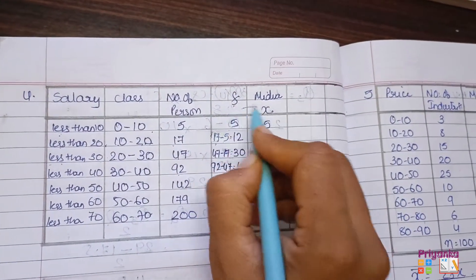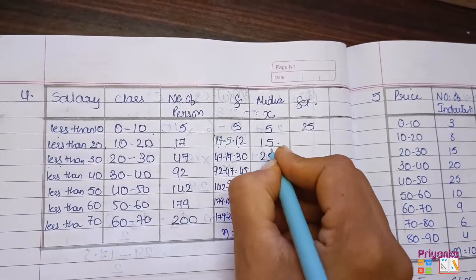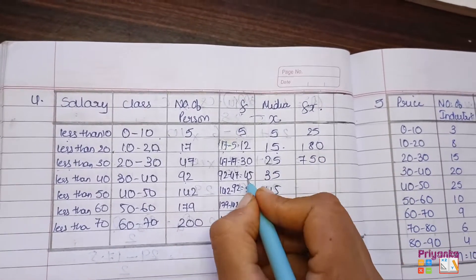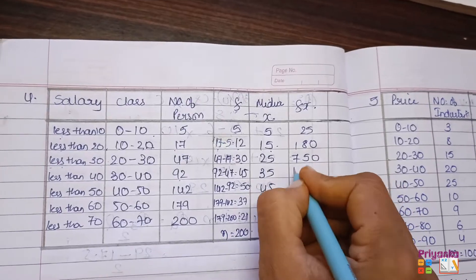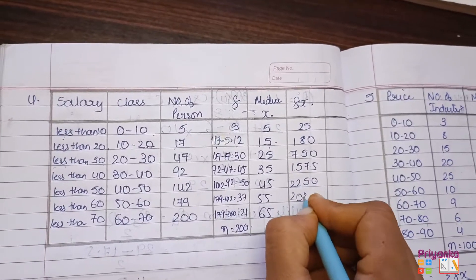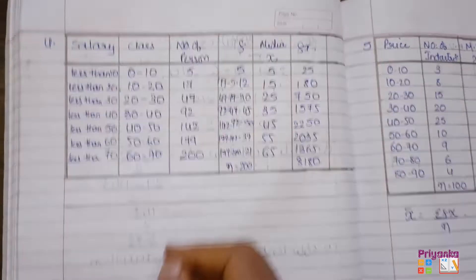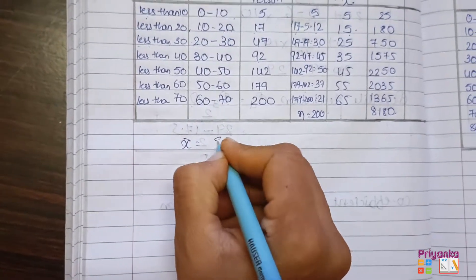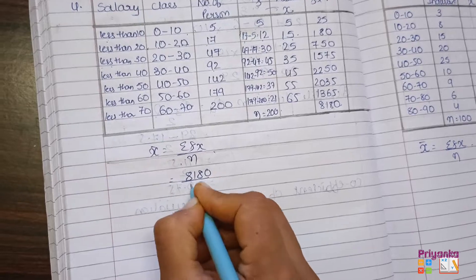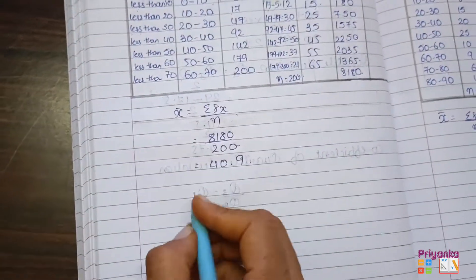Then multiply F and X to get Fx. That is 5 fives are 25; 12 into 15 gives 180; 30 into 25 is 750; 45 into 35 gives 1575. Then continue with your calculator — the remaining products are 2035, 1365, and the total of the Fx column is 8180. Now first we find the mean, that is sigma Fx upon n: 8180 divided by 200 gives the answer 40.9.